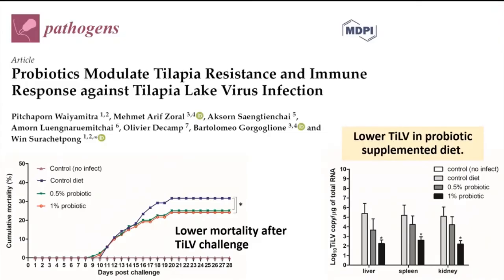In another study, we added probiotics to tilapia feed and then challenged with TiLV. Fish fed probiotics had lower mortality after viral challenge — the 1% and 0.5% supplementation groups had about 10% less mortality than controls. When measuring virus levels in the liver and kidney, the 1% probiotic group had the lowest virus concentrations, suggesting that probiotic supplementation can alleviate viral infections, though the exact mechanism is still unknown.